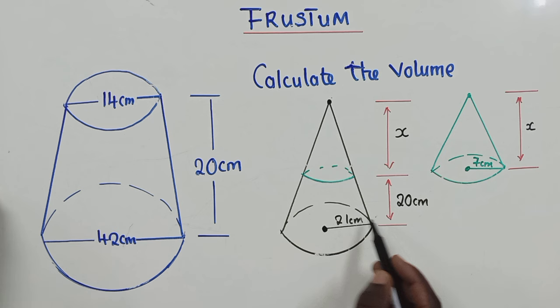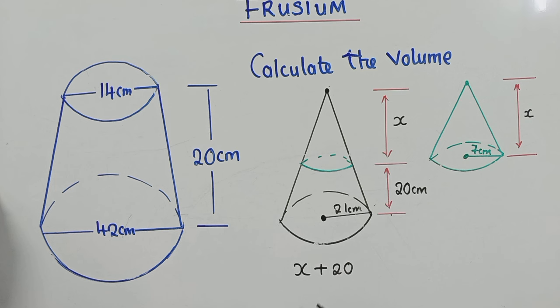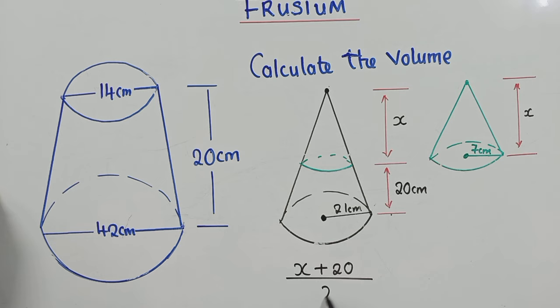We'll say the height of the finished cone, this cone from here to here, will be x plus 20. So this is the height, x plus 20. From here to here we have 20, and here to here it's x. So add these two. And the height of the cone, the part that has been cut off, is x.